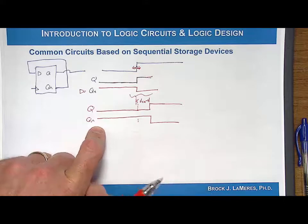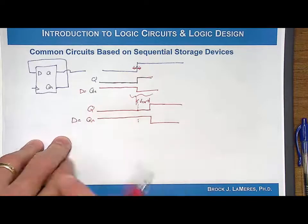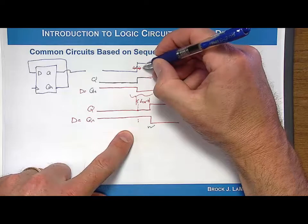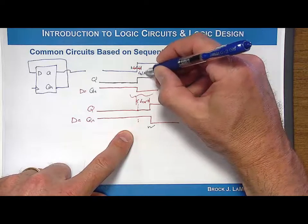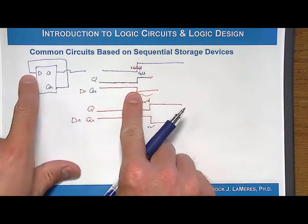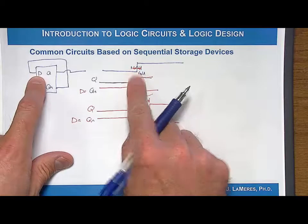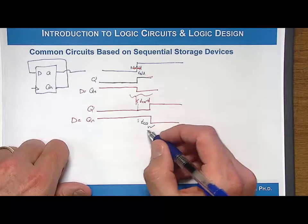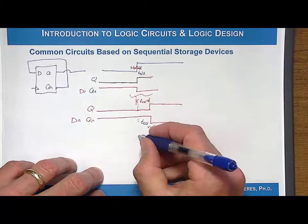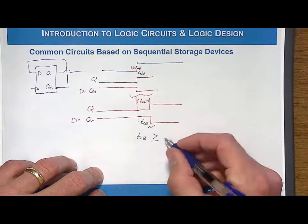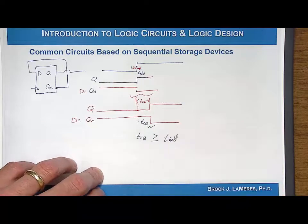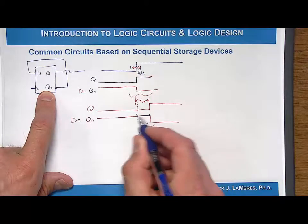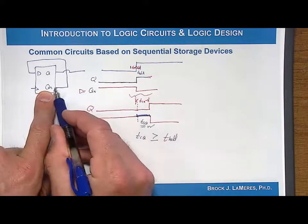Now this is important because this is D right here. What we were really worried about is having the transition on D occur too quickly and we didn't want to violate the hold time. If we allowed it to transition instantaneously and arrive back here, we changed D too quickly after the clock edge. Well, what we had though, is that it didn't transition until T clock to Q.